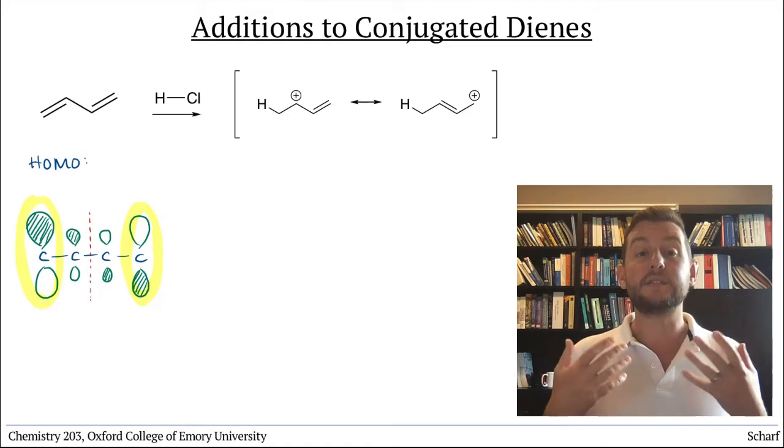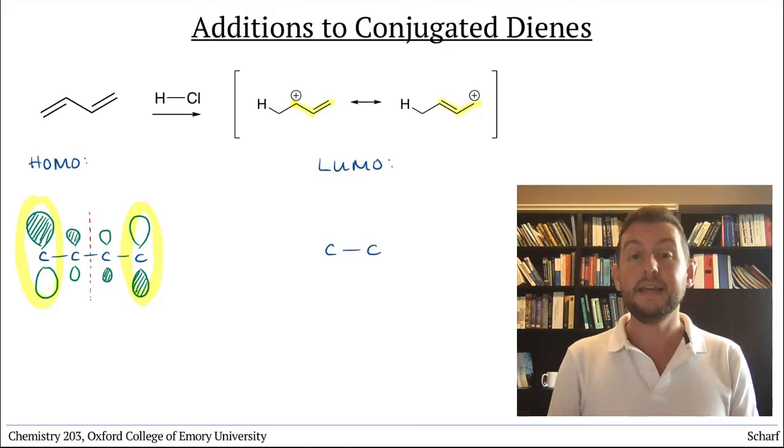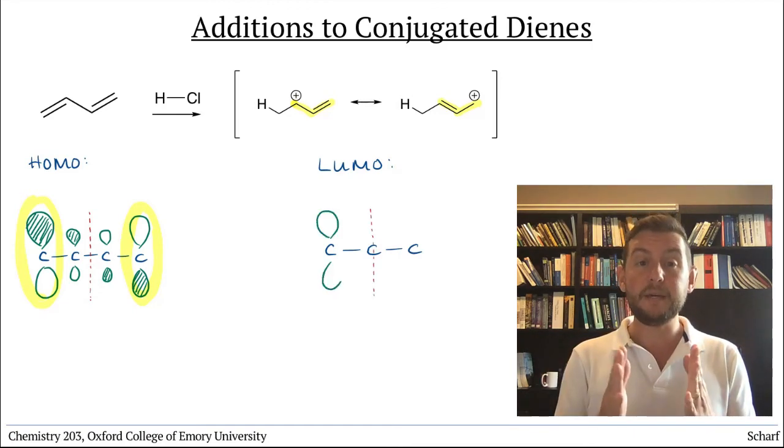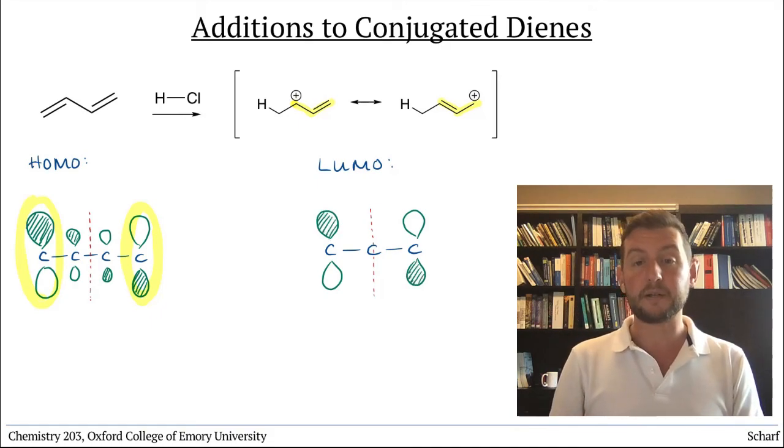Then, when we have this resonance-stabilized allylic carbocation, its LUMO is this. It looks like an empty P orbital spread out between the two carbons where we can draw the positive charge, and it's to either of those carbons that the chloride can add.